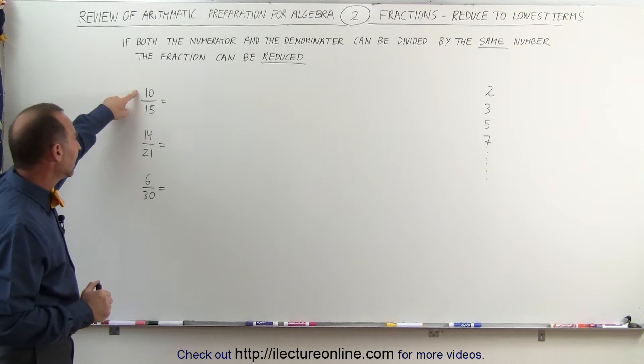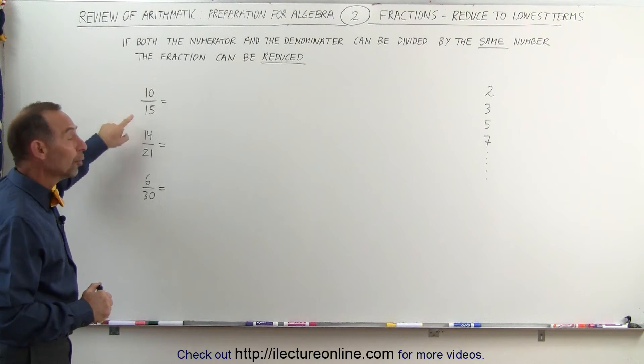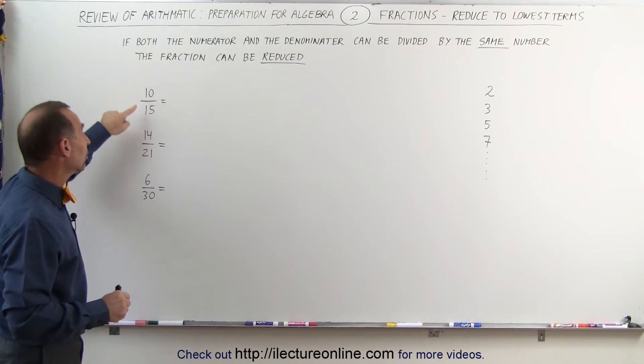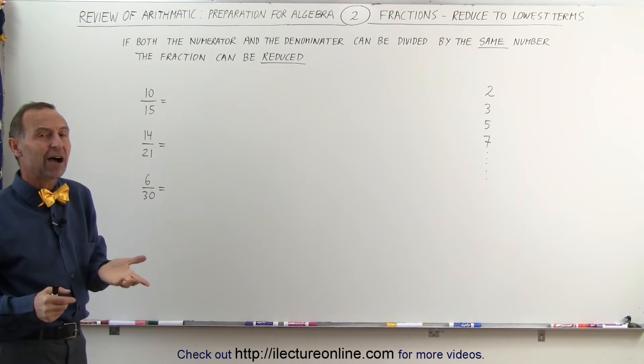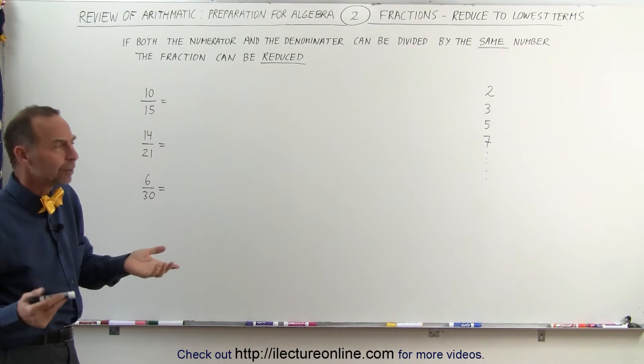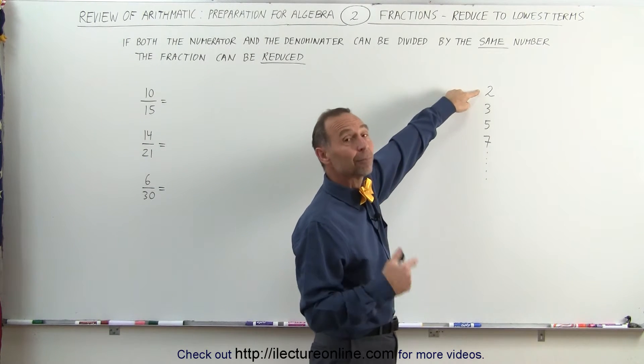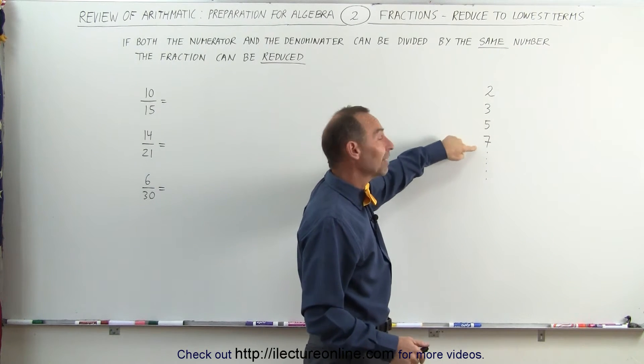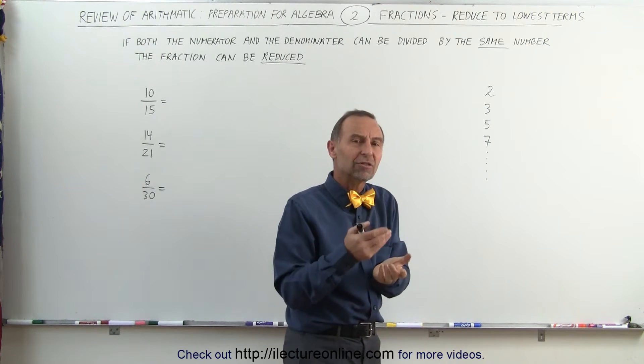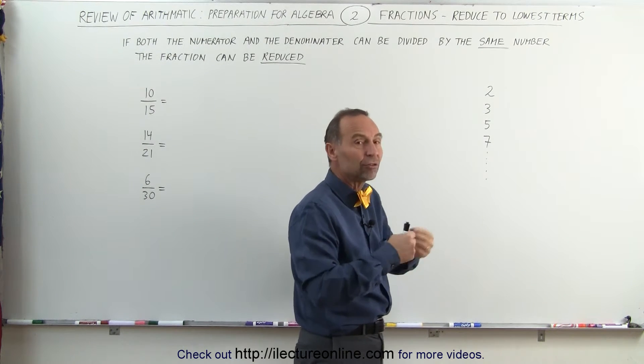For example, 10 over 15 or 10 fifteenths. Notice that both the numerator and the denominator can be divided by 5. How do we know that? What we typically do is we go through the sets of numbers that are typically prime numbers, 2, 3, 5, and 7, and we can check to see if it's divisible by the same number by following some rules.